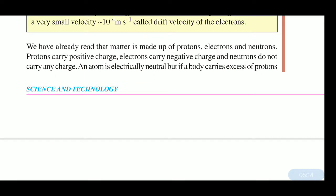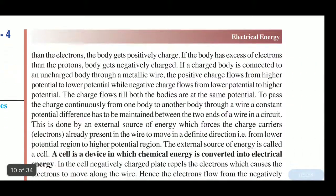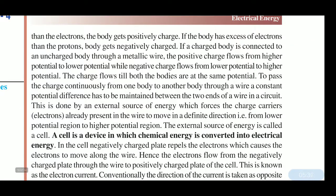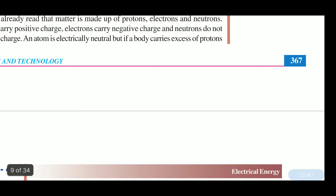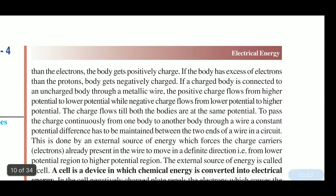We have already read that matter is made up of protons, electrons, and neutrons. Protons carry positive charge, electrons carry negative charge, and neutrons do not carry any charge. An atom is electrically neutral, but if a body carries excess of protons, then the body gets positively charged.